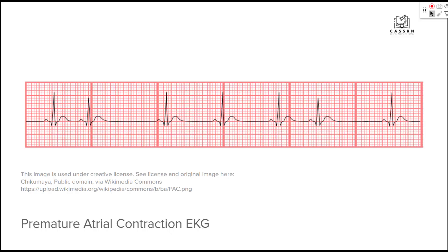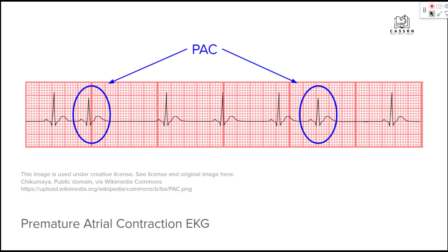We're going to look at this EKG here so you can understand what this looks like and visualize it as we go through this lecture. When a pacemaker cell close to the SA node fires early, it causes an extra heartbeat. As you can see, these two circled heartbeats are earlier — they're sooner than they should be and don't match up with the rest of the rhythm. Then you're going to see a compensatory pause, where the system kind of resets and the SA node goes back to the regular rhythm normally.